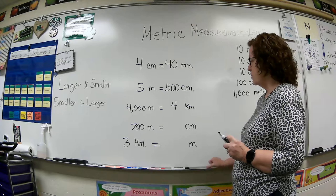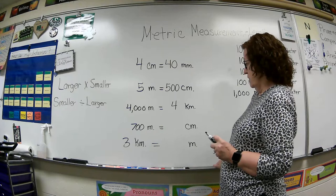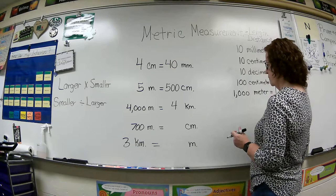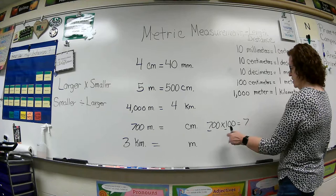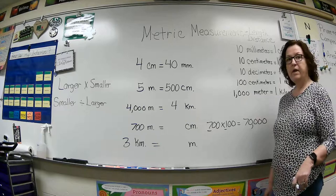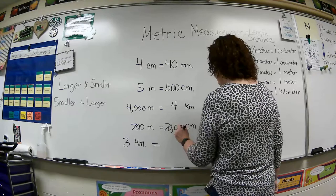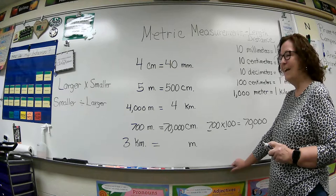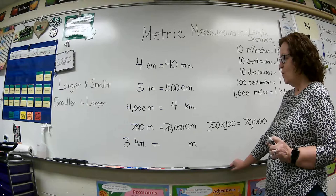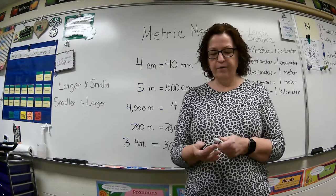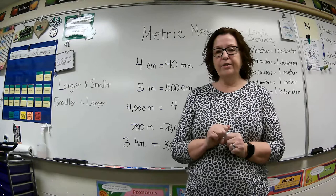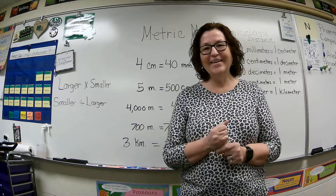Here we are going from larger to smaller: 700 meters would make how many centimeters? That's 700 times 100. I know 7 times 1 is 7, and we tack on those zeros — that's 70,000 centimeters. Then let's go from 3 kilometers to meters — larger to smaller, so we multiply. 3 times 1,000 gives us 3,000 meters. You see what I mean when I say converting is easier in metric, because you're using multiples of 10 — much easier than working with 12 and 36 and so on.